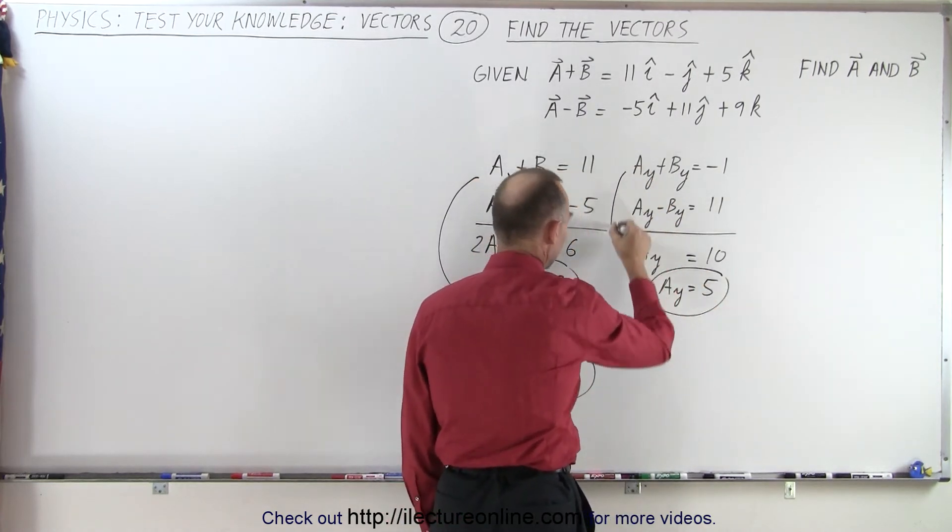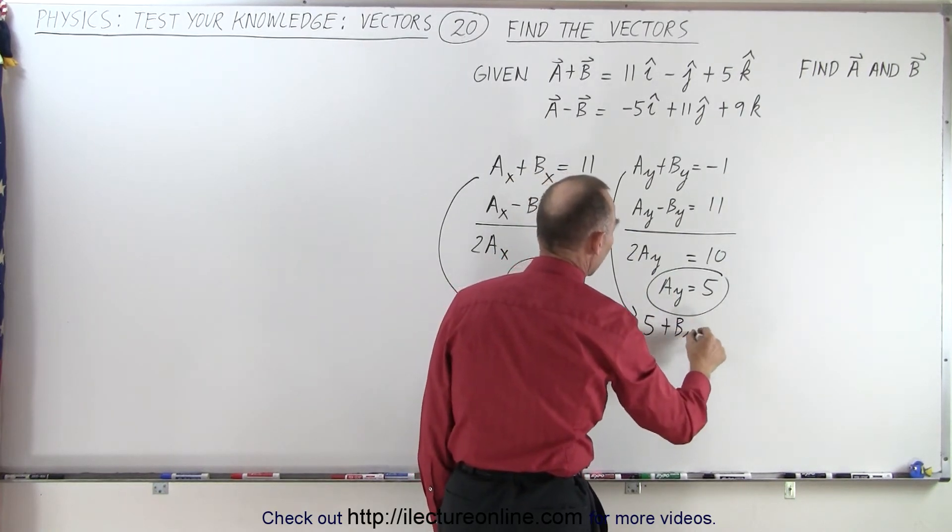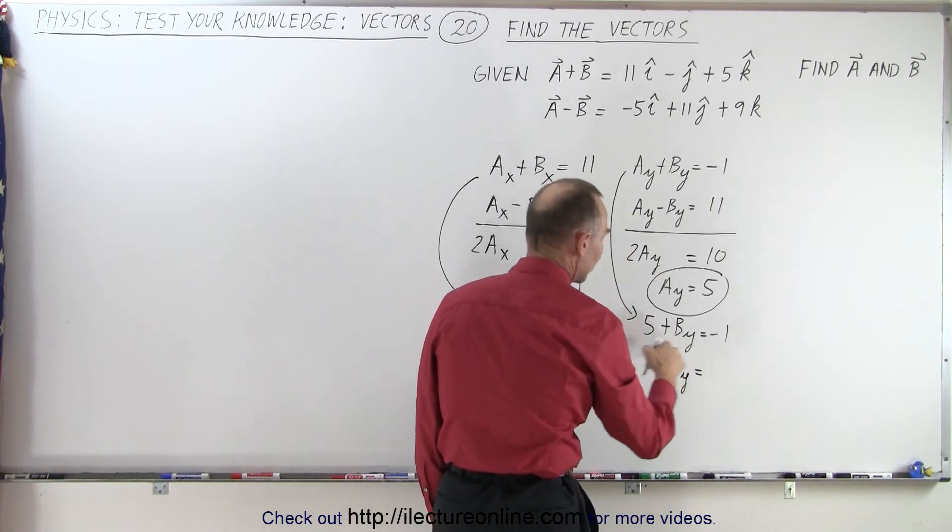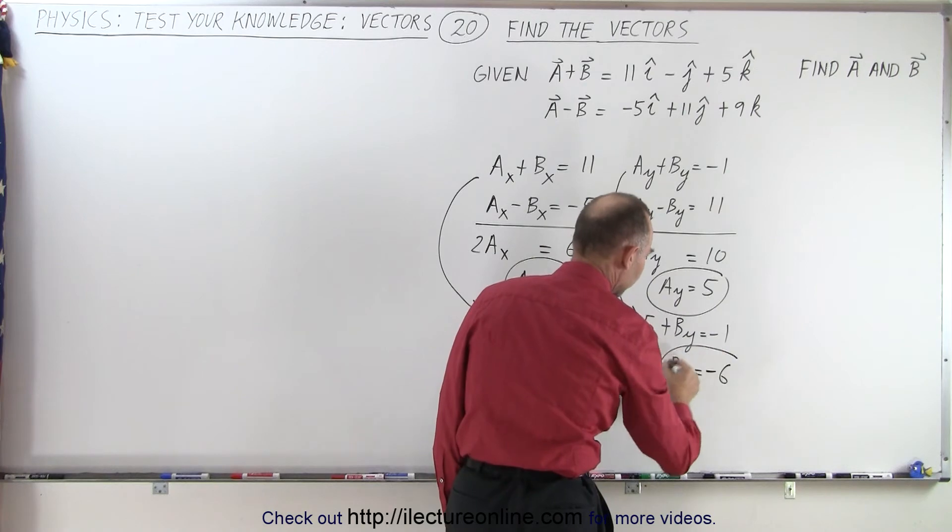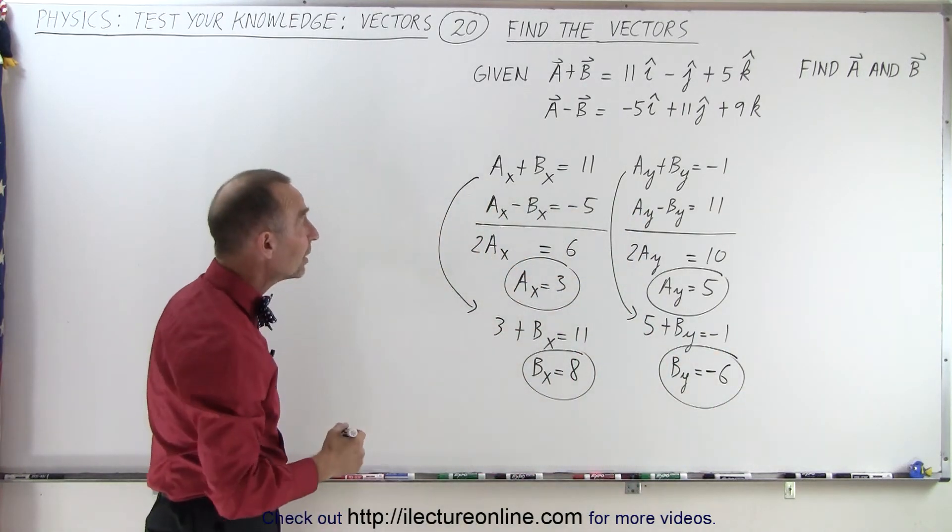And if a sub y is equal to 5, we can plug that in here. We can say that 5 plus b sub y is equal to negative 1, or b sub y is equal to negative 1 minus 5, or negative 6. We can do the same thing with the z components.